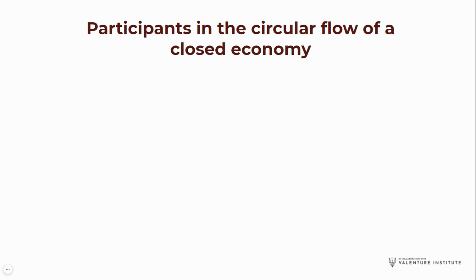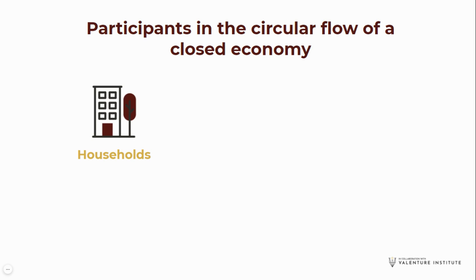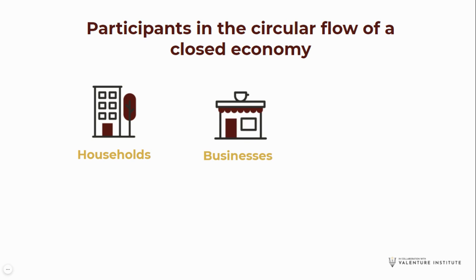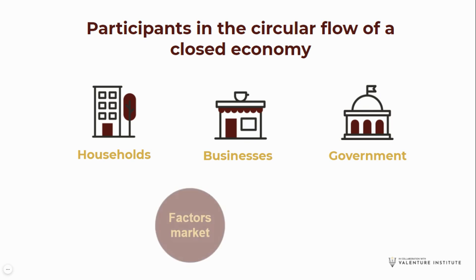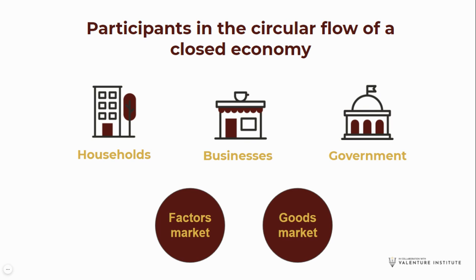Let's look at the participants in a circular flow. First, we have the households. Households are one or more people that live together and make economic decisions — they decide what they spend their money on, where they want to work, what they want to invest in. Then we have businesses and the government. Between households, businesses, and the government, goods and services flow, factors of production flow, and money flows. Factors of production flow through the factors market, and goods and services flow through the goods market.